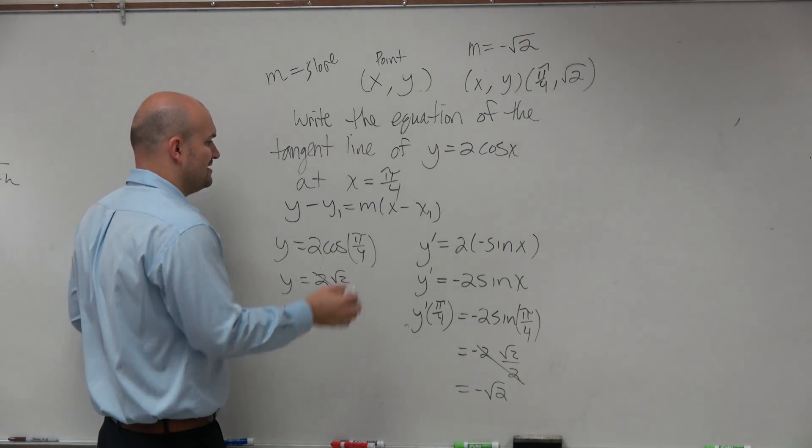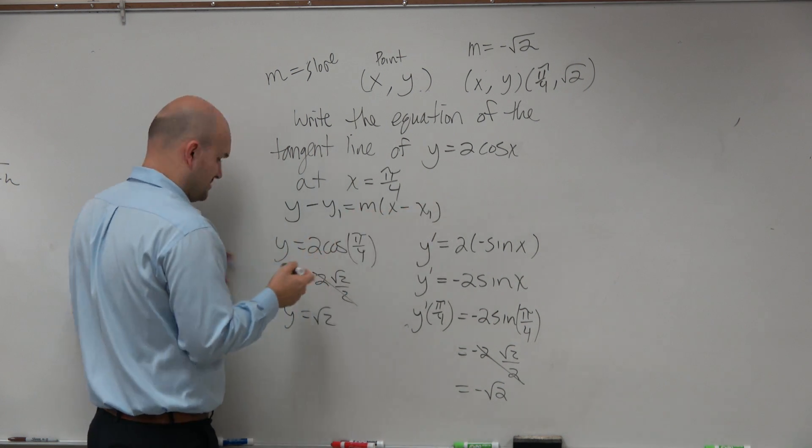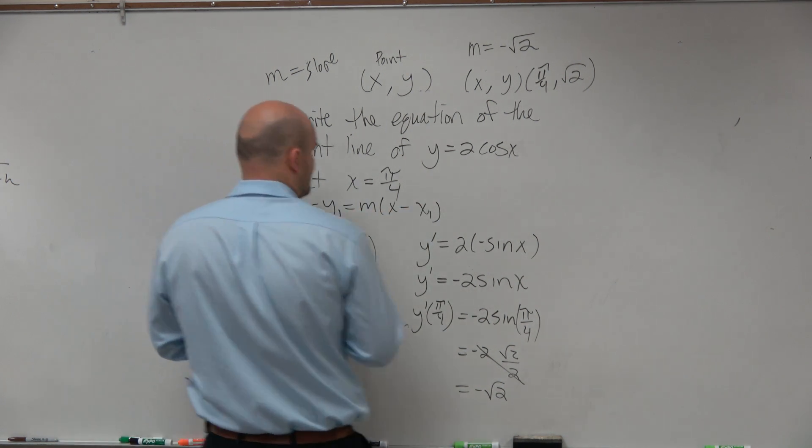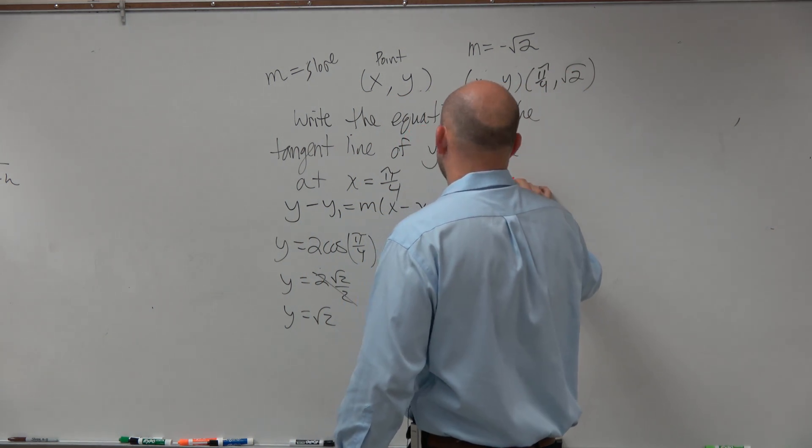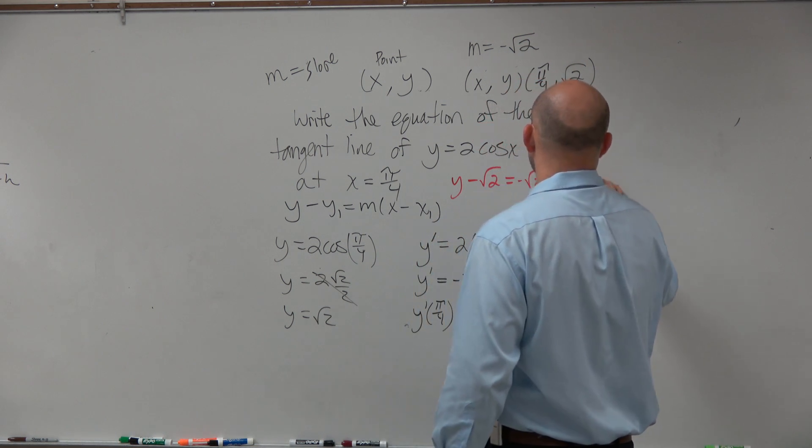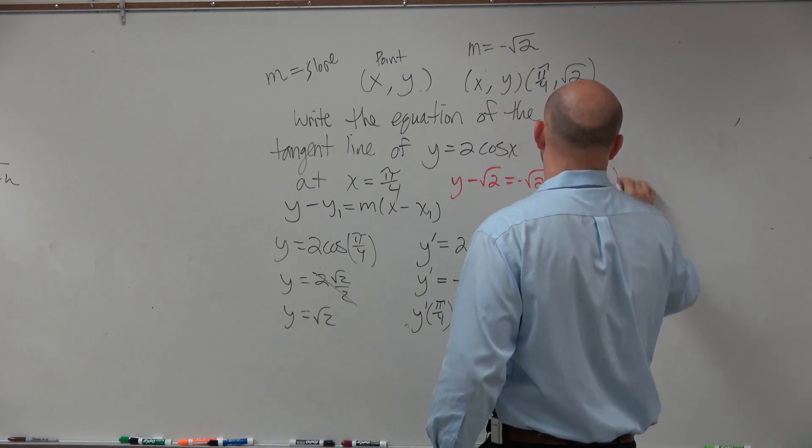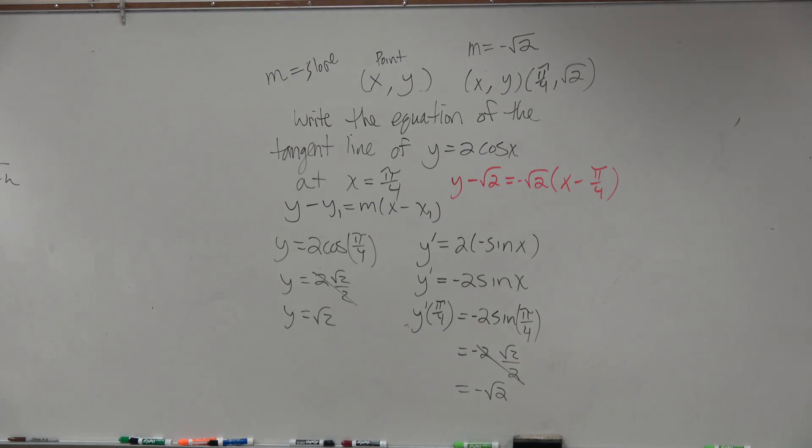So now guys, I have my y coordinate, I have my x coordinate, and I have my slope. So to write my equation, I'll just do y minus y1, which is square root of 2, equals m, which is negative square root of 2, times x minus pi over 4. There you go. That's it. Done.